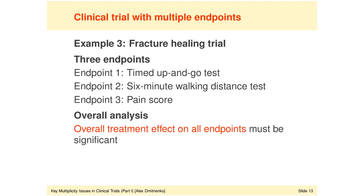The source of multiplicity in this clinical trial is the fact that three endpoints are utilized to evaluate the efficacy of this novel treatment. Endpoint one is based on the timed up-and-go test; endpoint two relies on the 6-minute walking distance test; and the last endpoint relies on a pain score. A very important feature of this trial is that those three endpoints are not treated as separate entities but are viewed as different components — different manifestations — of a single underlying clinical variable, which is functional improvement in osteoporosis.